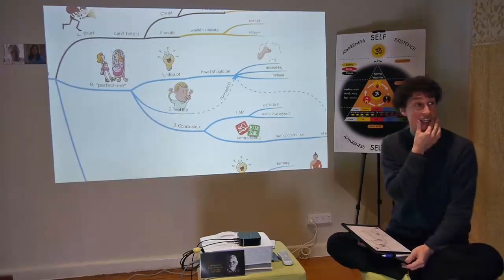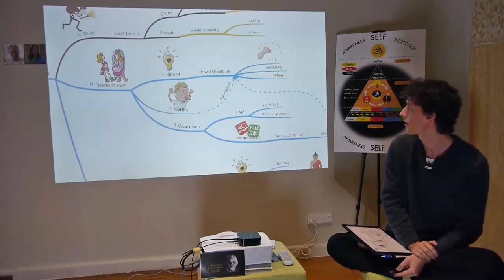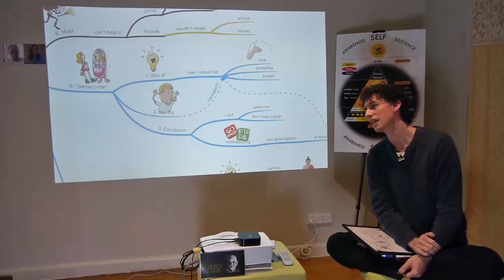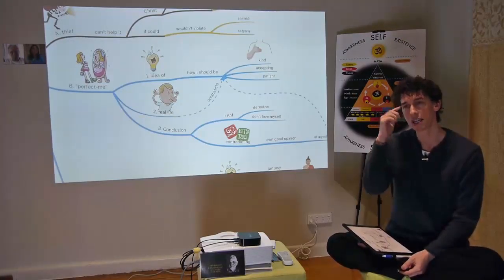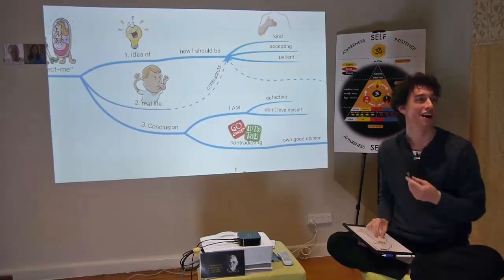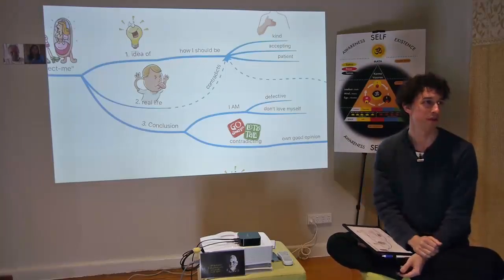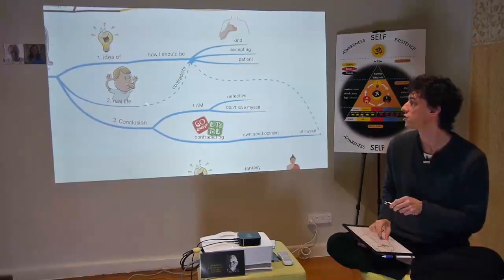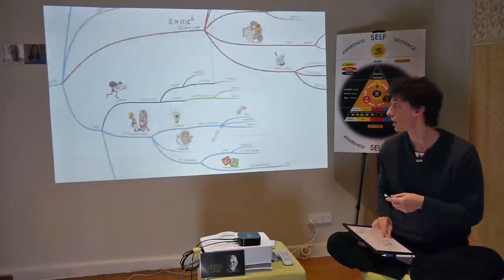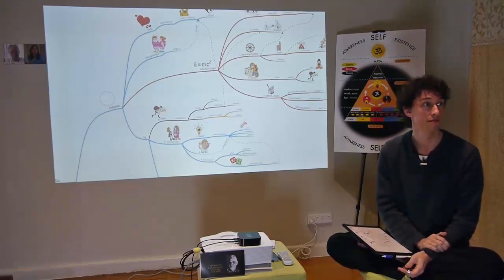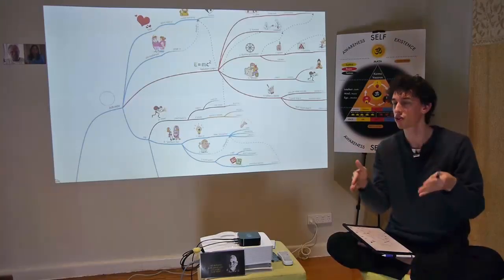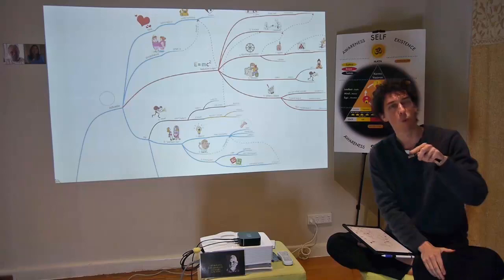We all have an idea of the perfect me — kind, accepting, patient, loving, generous. But in real life we totally contradict our good opinions of how we should be. This causes us to conclude: I'm not loving, I'm unworthy, something is wrong with me. But is that true? Considering the logic of why you are the way you are — it can't be true. You're doing things as a result of exposure to the environment you were put in. Did you choose what neighborhood to grow up in? Did you choose what friends to have?